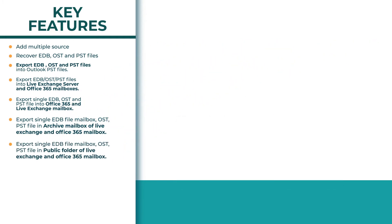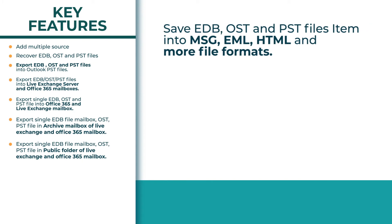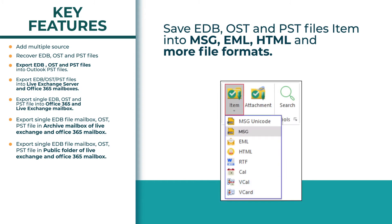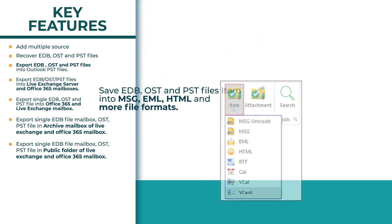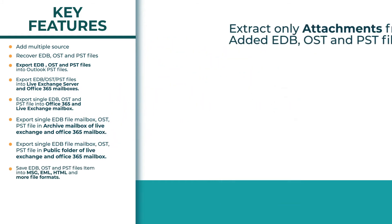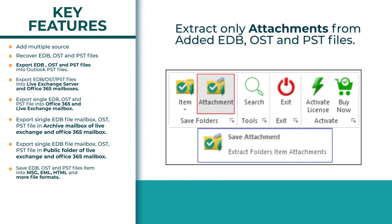Using this software, you can save EDB, OST, and PST files into extensions like MSG, EML, HTML, and many more file formats. If you want to extract only attachments from added sources like EDB, OST, and PST files, the software allows you to do so.